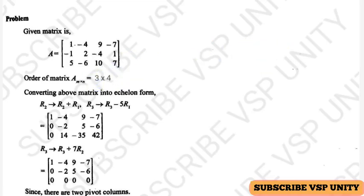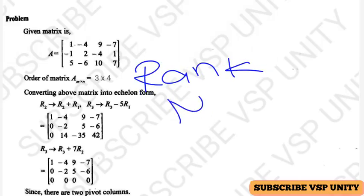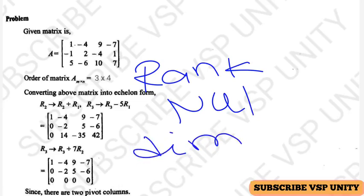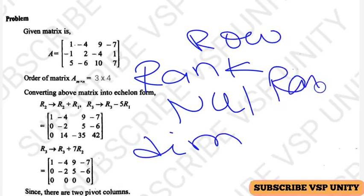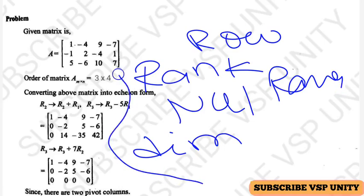Now, first of all, we need to convert the given matrix into echelon form. Whether you want to find rank, dimension of null space, nullity, dimension of column space, dimension of row space, or range — whatever it may be, first of all you need to convert the given matrix into echelon form. After finding echelon form only, you can find all these terms.